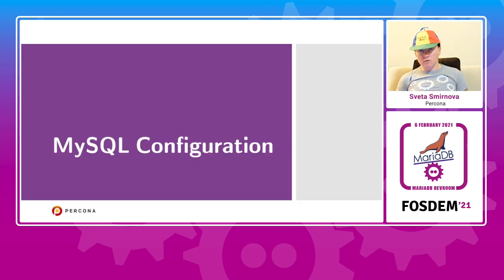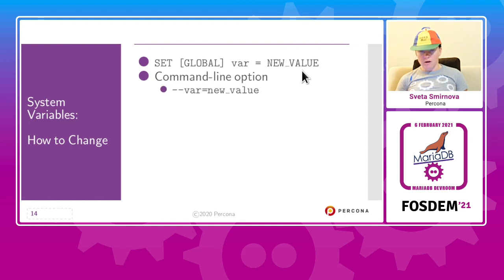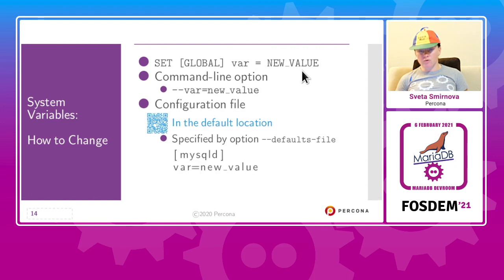The next part is MySQL configuration. If you have good hardware with a high amount of memory and threads but do not configure MySQL properly, it will not use it. MySQL configuration is changed by changing server variables using the SET GLOBAL variable command with a new value. Variables can also be changed on the command line or in the configuration file, which can be either in the default location or specified by an option. There are QR codes and active links in the slides — after the conference, slides will be shared and you can download them and follow the links, or use the QR code right now.